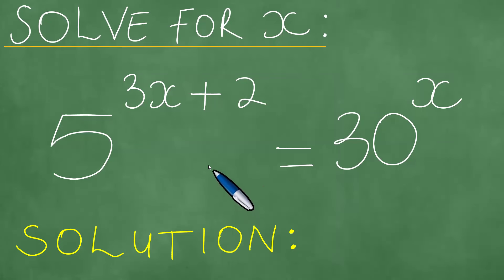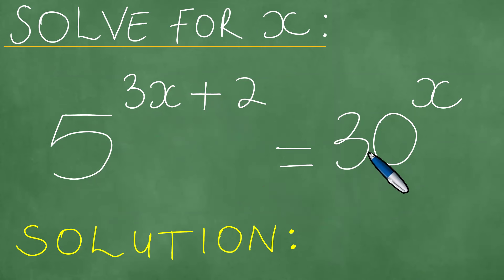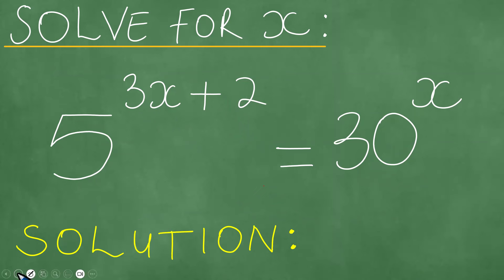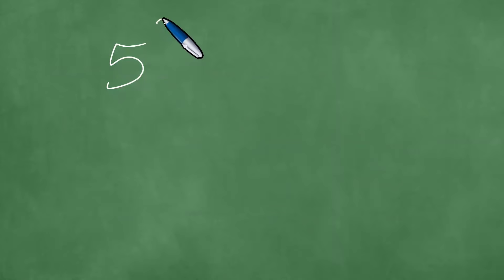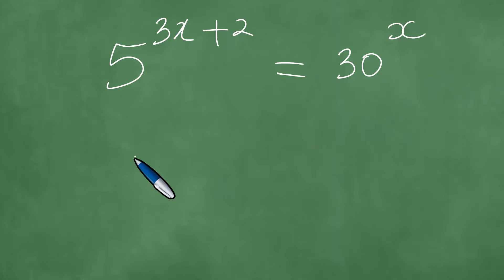We need to solve for x given this exponential equation: 5 to the power 3x plus 2 is equal to 30 to the power x. We will present a solution to this problem in a step-by-step fashion.